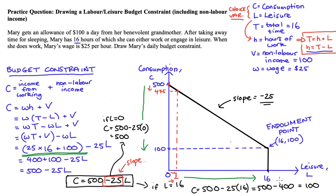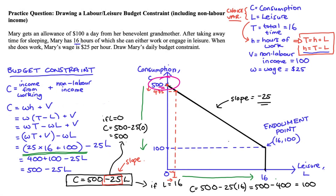Once you get used to these problems, you can draw this without any algebra, though you'll likely need algebra in exams for full marks. If you want to do it quickly: the consumption axis intercept is just the maximum consumption possible — wage times maximum time plus any non-labor income. The horizontal axis endpoint is big T, the total time available. The budget constraint is perfectly vertical up to the level of non-labor income. Join it all up and you've got your budget constraint for the labour-leisure model with non-labor income. It's really all just practice.